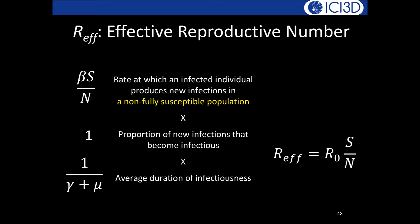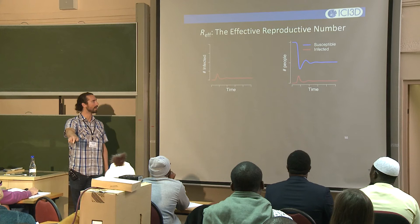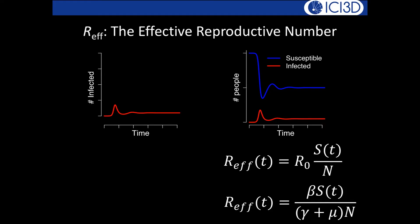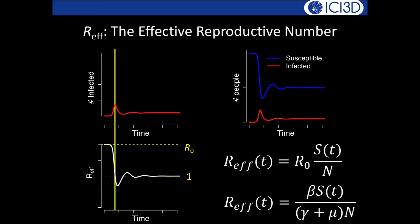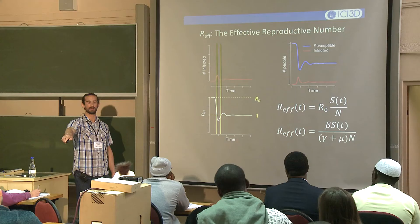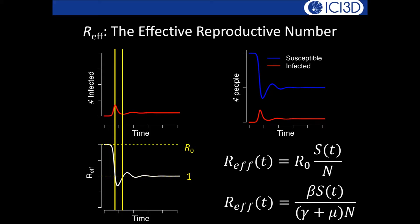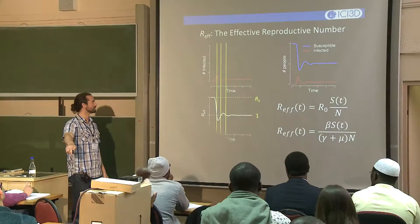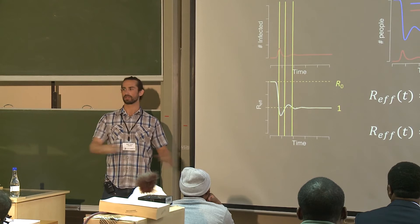Tracking R_effective in the demographic model reveals it starts at R0, falls below one (epidemic peak), reaches its trough when R_effective hits one again and starts increasing, and stabilizes around one at the endemic equilibrium — where each person infects exactly one other person.